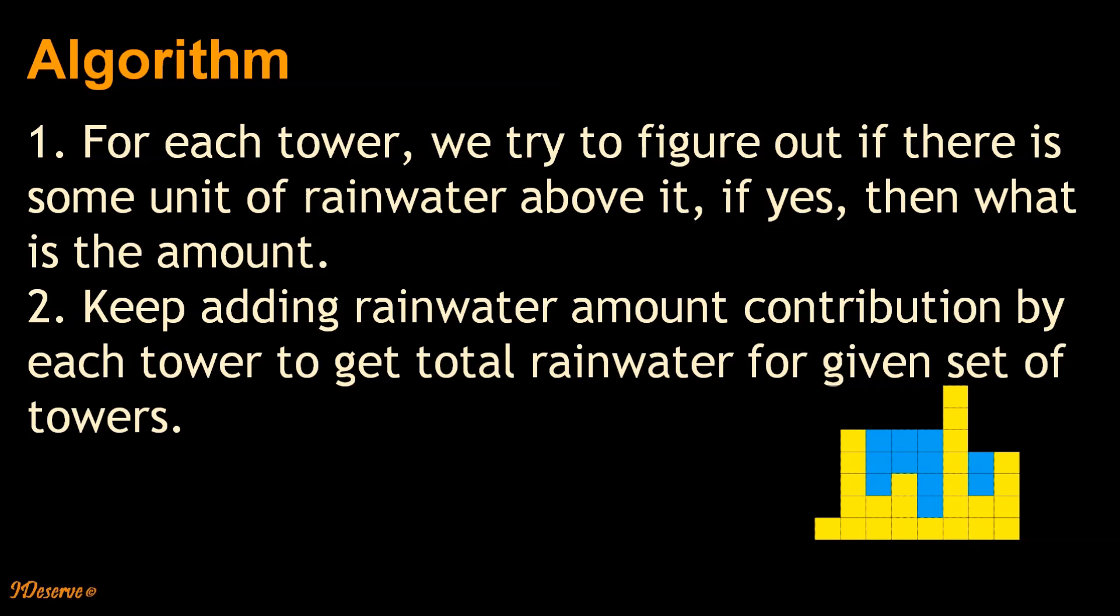So let's try to go to the algorithm for this problem. For each tower, we try to figure out if there is some unit of rain water above it. If yes, then what is the amount? And then we keep adding rain water amount for a given set of towers.